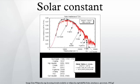The Earth receives a total amount of radiation determined by its cross-section, but as it rotates this energy is distributed across the entire surface area. Hence the average incoming solar radiation, taking into account the angle at which the rays strike and that at any one moment half the planet does not receive any solar radiation, is ¼ the solar constant.